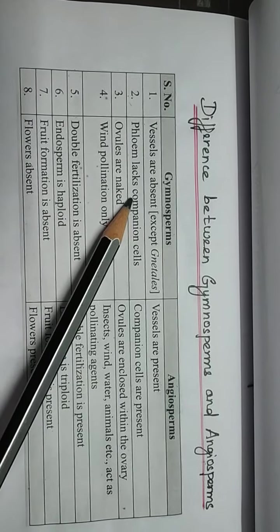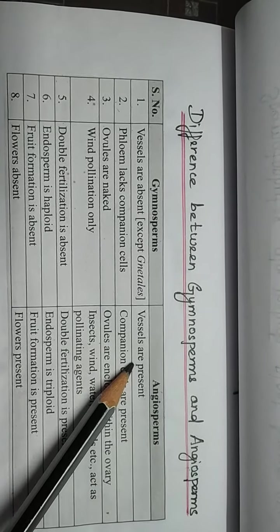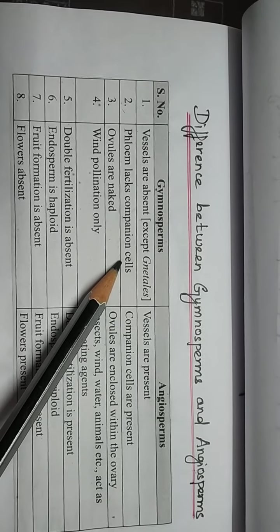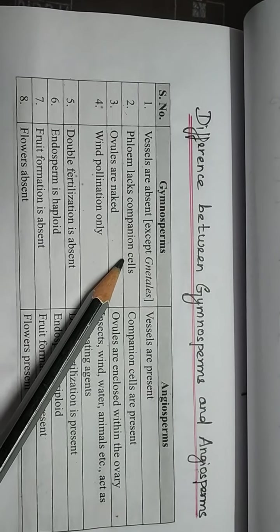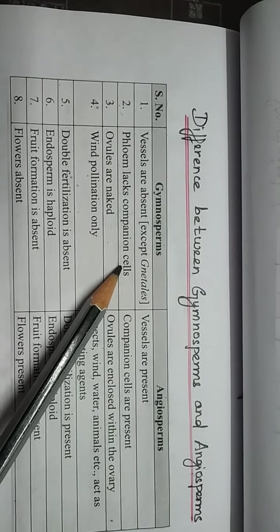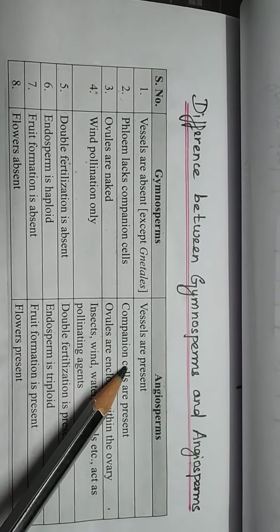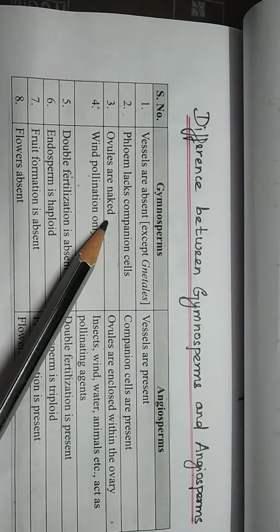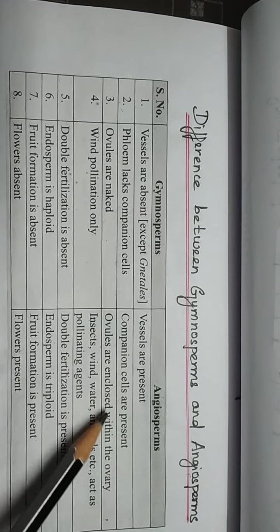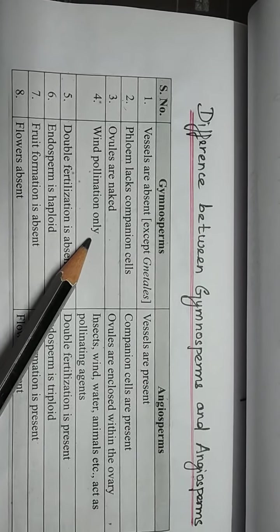Vessels are absent in gymnosperms except in Gnetales. Vessels are present in angiosperm plants. The seeds are enclosed within the ovaries — fruits and seeds are enclosed in angiosperms. In gymnosperm plants, wind pollination only occurs.